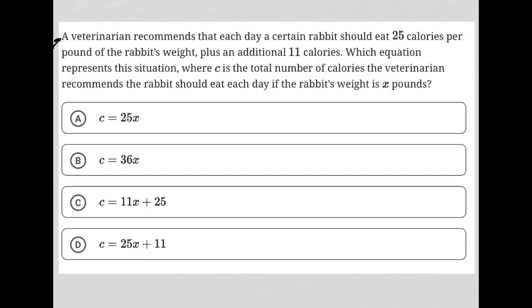So this question says, a veterinarian recommends that each day a certain rabbit should eat 25 calories per pound of the rabbit's weight plus, right, so we know that's plus, an additional 11 calories.